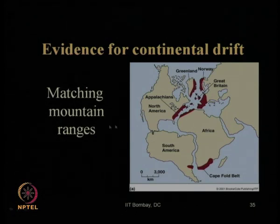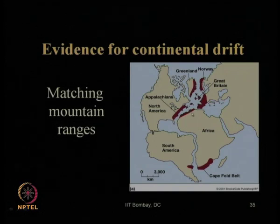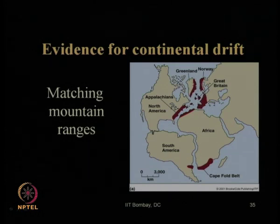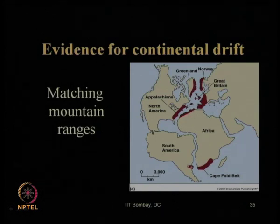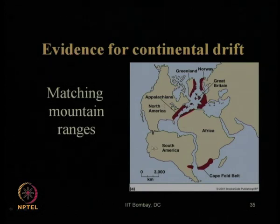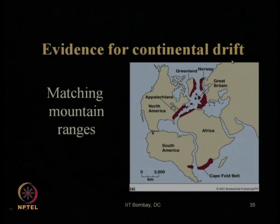Similarly, matching the mountain ranges: the mountains available in the south-eastern part of North America, north-western part of Africa, south-western part of Great Britain and Europe, Greenland, and Norway are composed of single mountain ranges. If you bring those blocks together they will form a single mountain range. Similarly with Africa and South America — this shows that once upon a time they were together and with time they got separated. This is another evidence for the continental drift theory of Wegener.